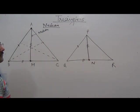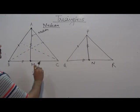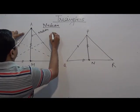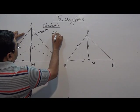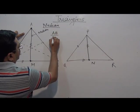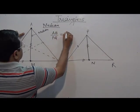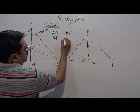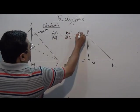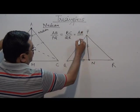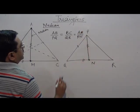Two sides and one median, if it is proportional, so triangles will be similar. What is given? AB upon PQ is same as BC upon QR, is same as AM median upon PN. This is given.